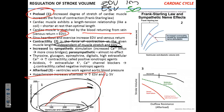How can you increase contractility? Sympathetic stimulation. That leads to higher influx of calcium into the muscle cells. Calcium interacts with troponin — more interaction with troponin means tropomyosin is more effectively shifted from actin, more cross-bridges are formed between actin and myosin, and contraction is stronger.